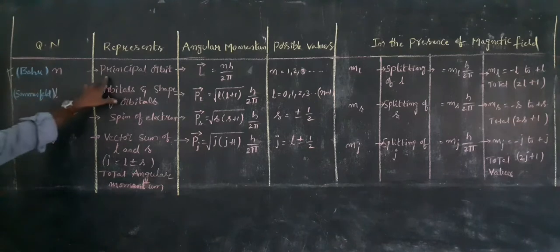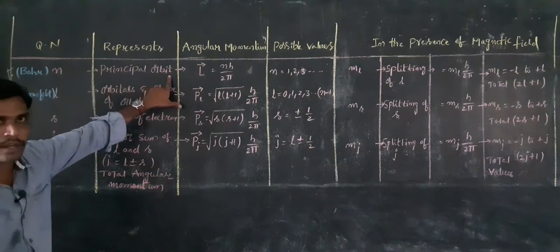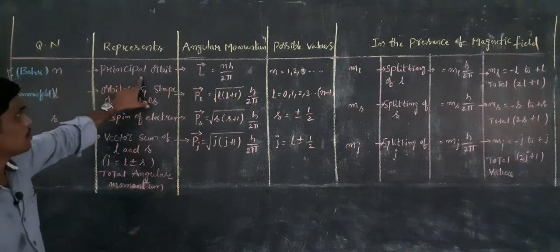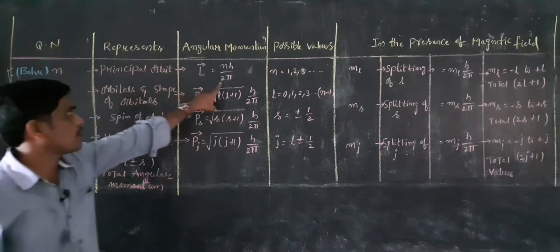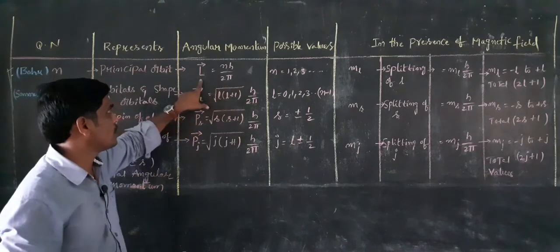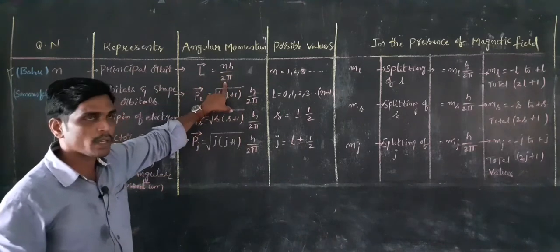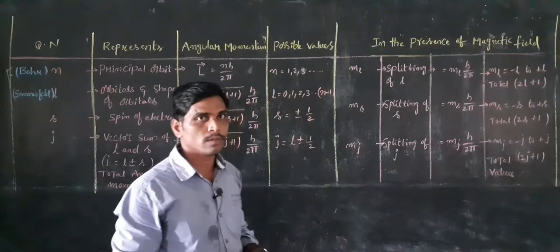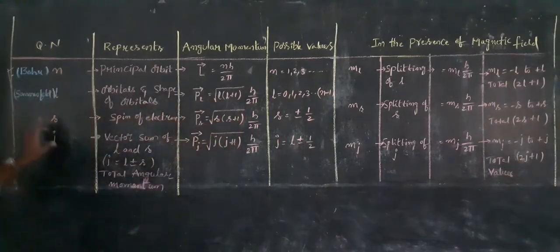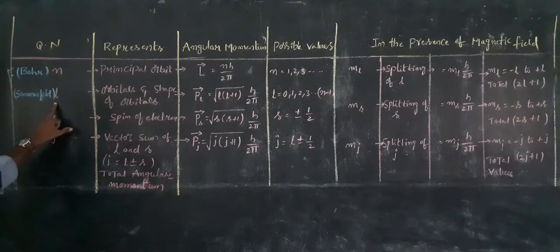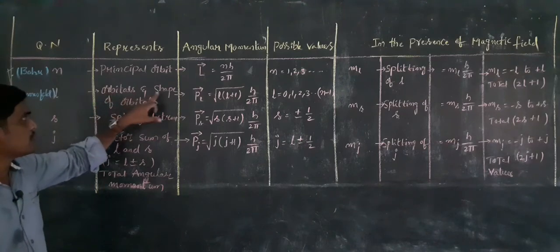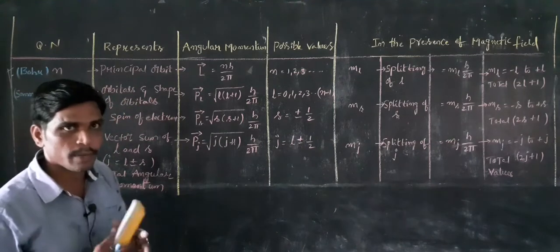That is N — the principal quantum number. The quantum number N is introduced to describe the major energy state of the electron. It is also called the orbital quantum number, which is an indicator of the orbitals and the shape of the orbitals. The electron occupies what are called sub-energy states.